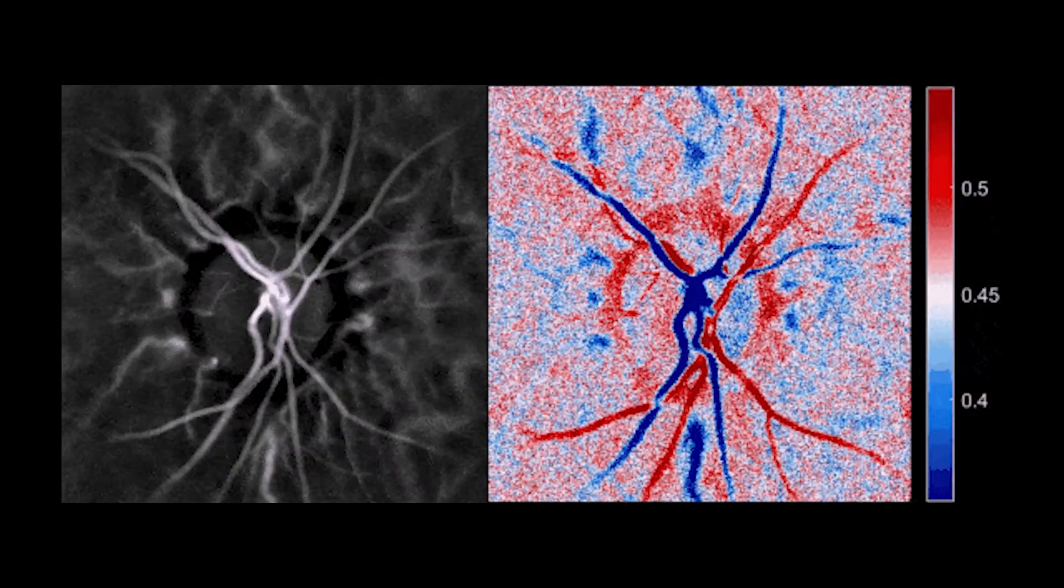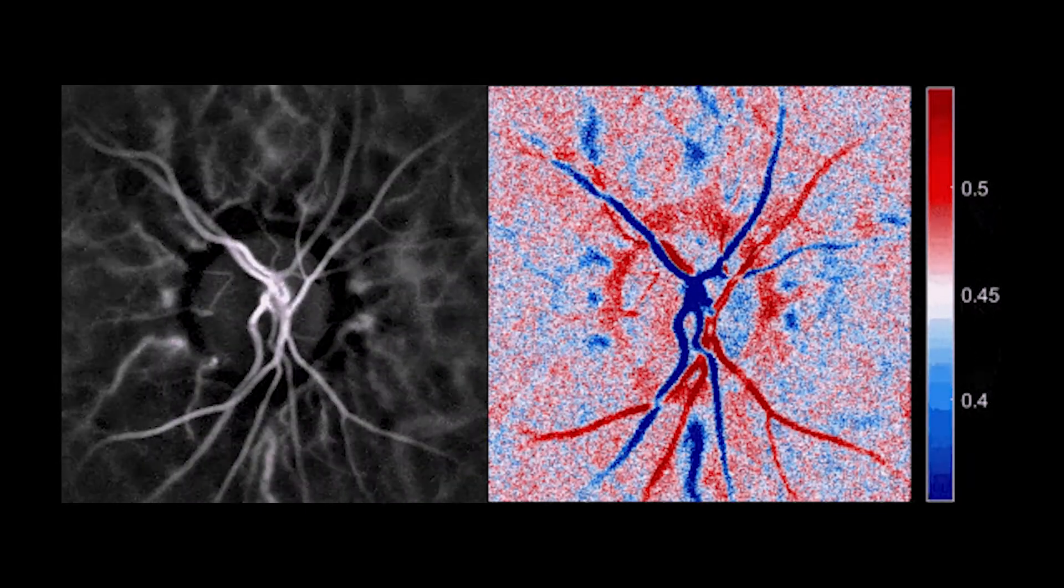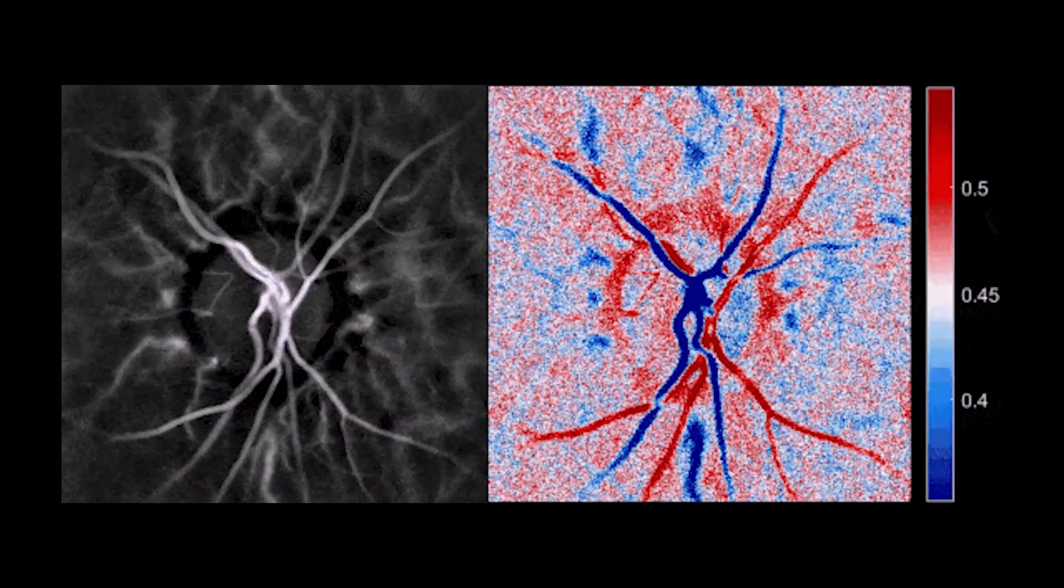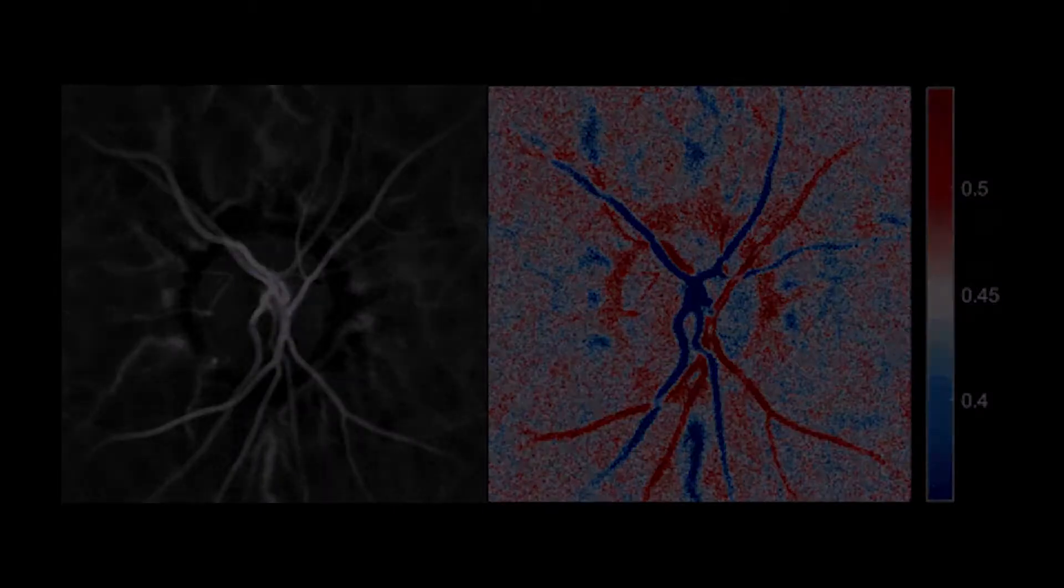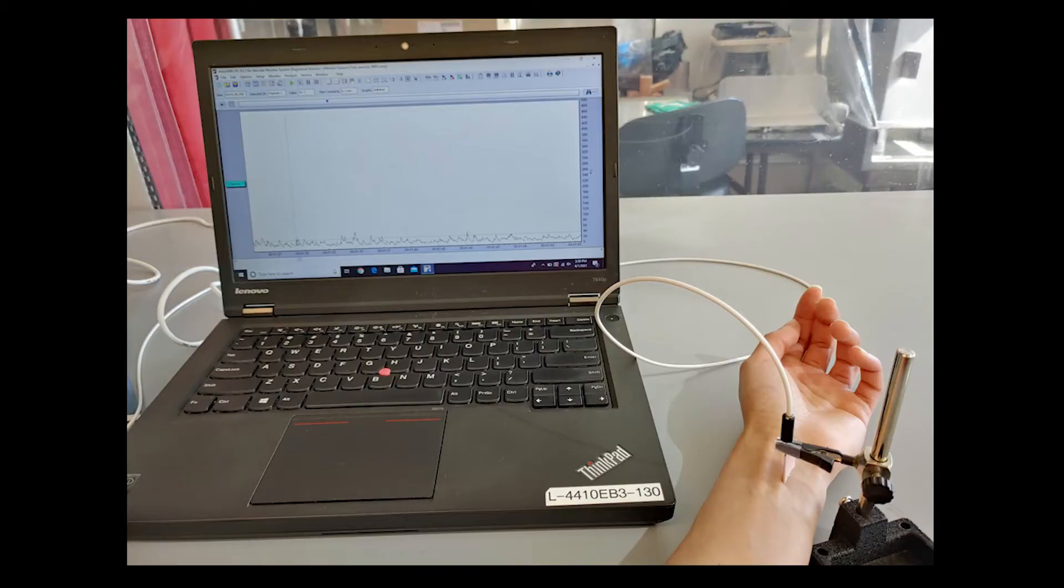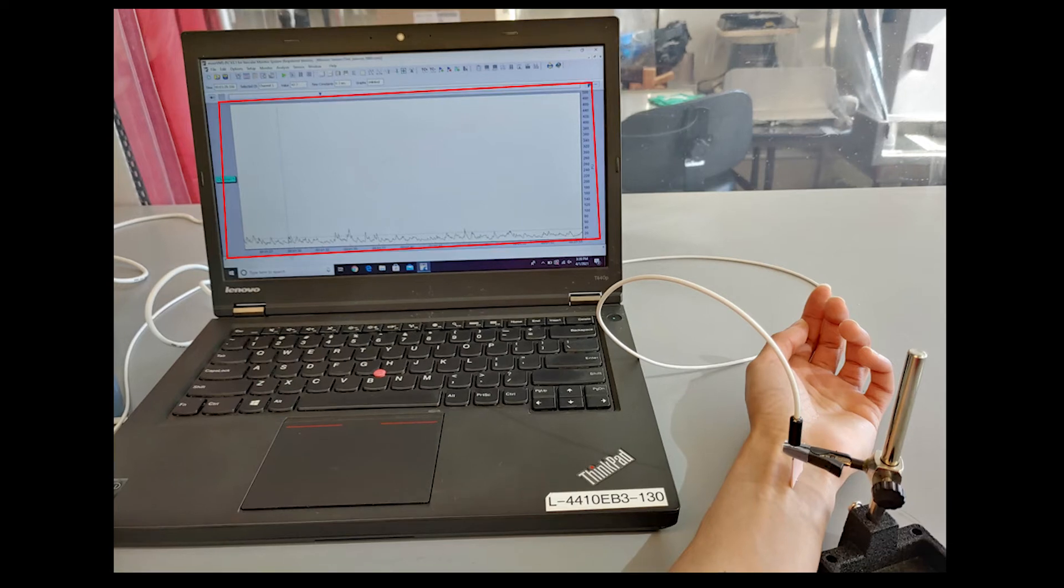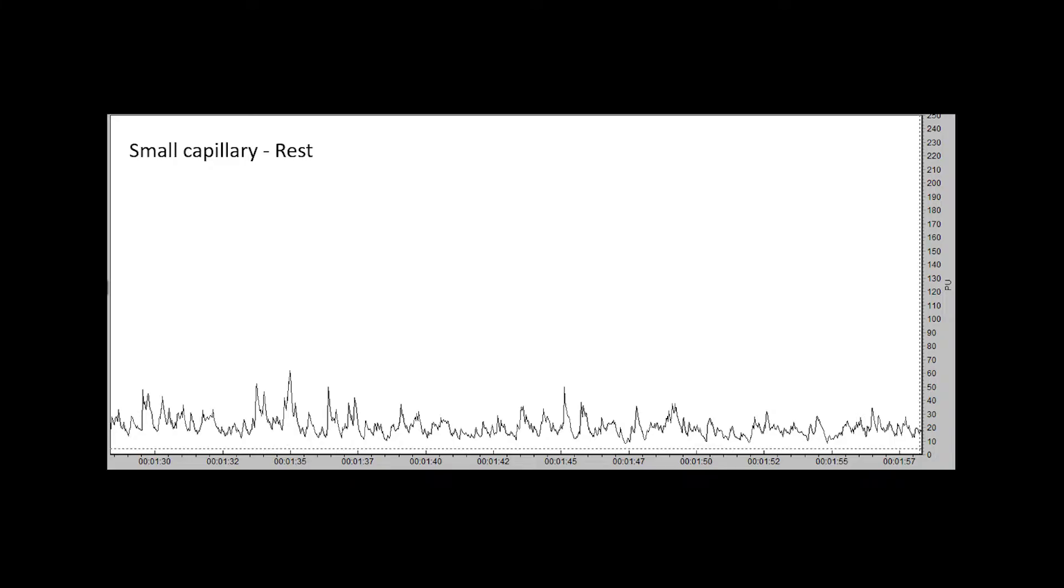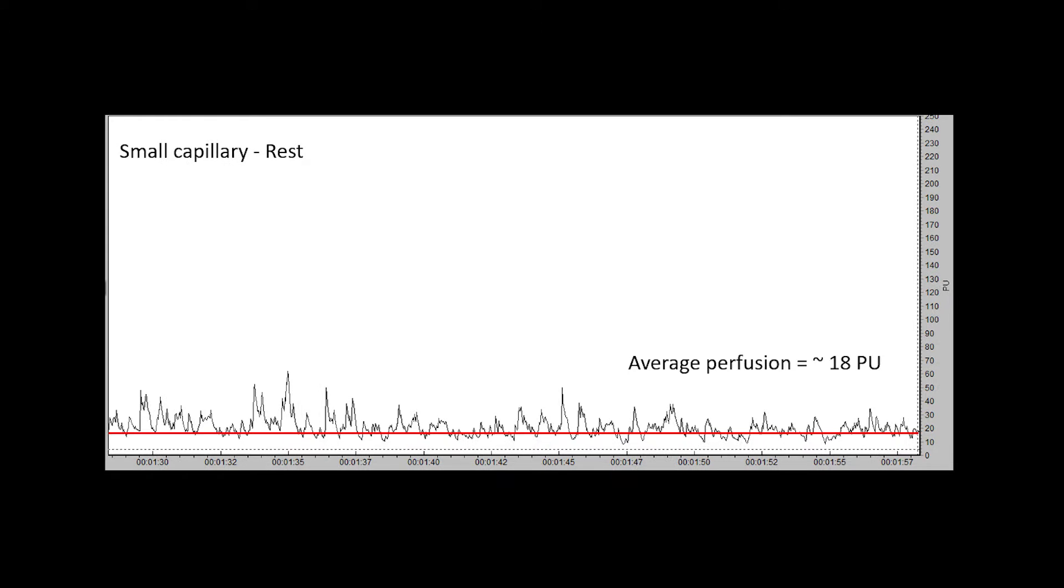LDF is useful for measuring changes in blood flow, or perfusion, after exercise. To do that, we begin by taking a measurement of a small capillary in the forearm at rest. If we zoom in on the measurement, we can see that perfusion at rest is about 18 perfusion units. These units correspond to the relative number of particles moving under the probe.